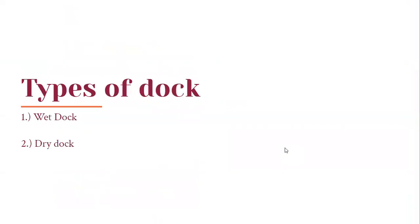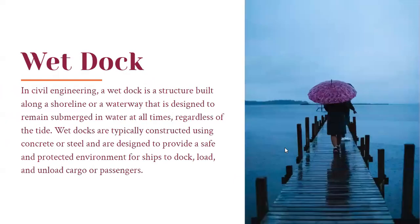Now, types of Dock. There are two types of dock. First is wet dock, and second is dry dock. In civil engineering, a wet dock is a structure built along a shoreline or waterway that is designed to remain submerged in water at all times, regardless of the tide.